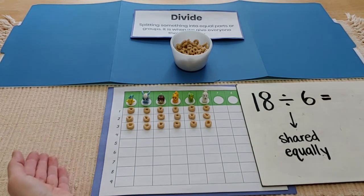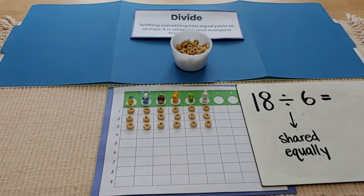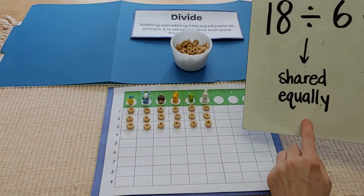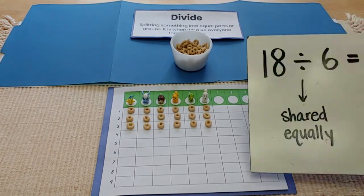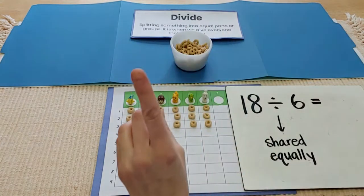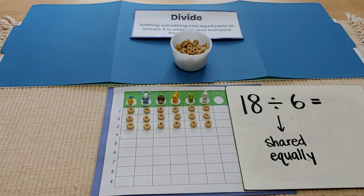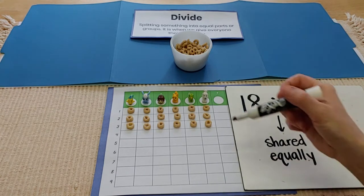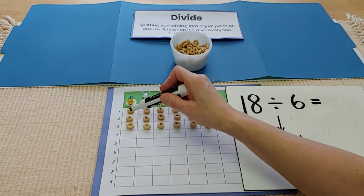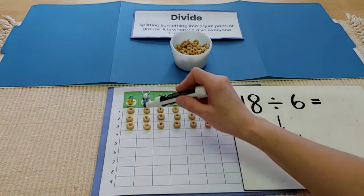Now, I'm out of Cheerios. I've used up my 18 counters and now I've shared them equally with my six friends. So let's see how much one person gets. Remember, an answer to a division problem is what one person gets. So let me get counting. One, two, three. They each get three.